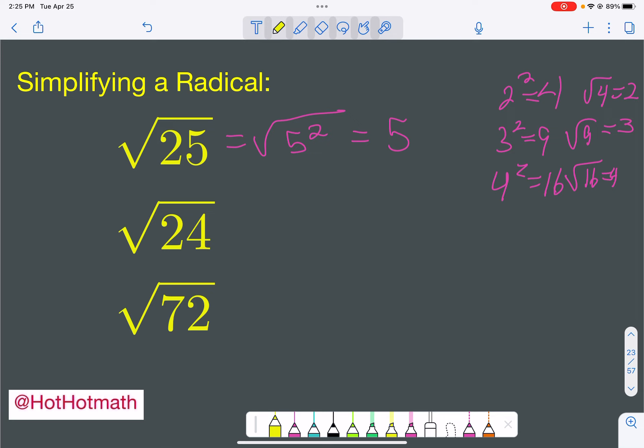But 24 is not on that list. What you can do for 24 is think of what is a number on this list that goes evenly into 24. Well, I know that 24 is 4 times 6.